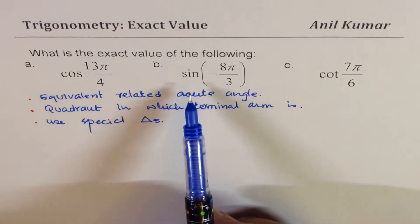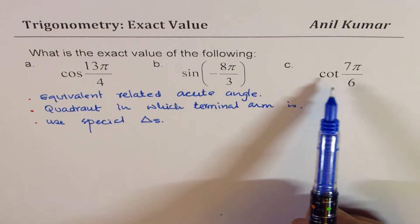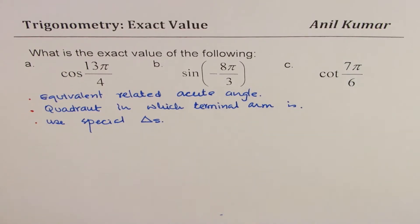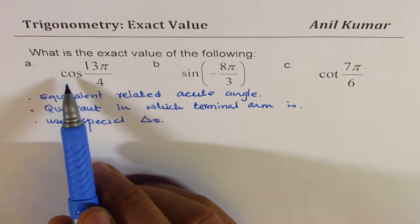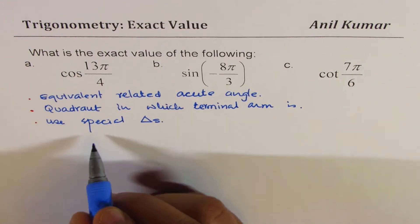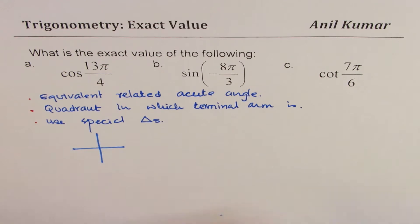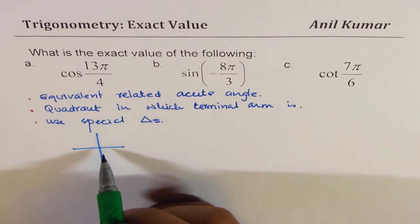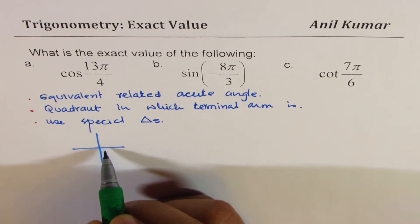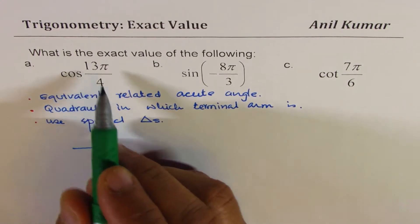The question here is: what is the exact value of cos(13π/4), sin(-8π/3), and cot(7π/6)? To find the related acute angle, we will see where the terminal arm terminates for cos(13π/4).